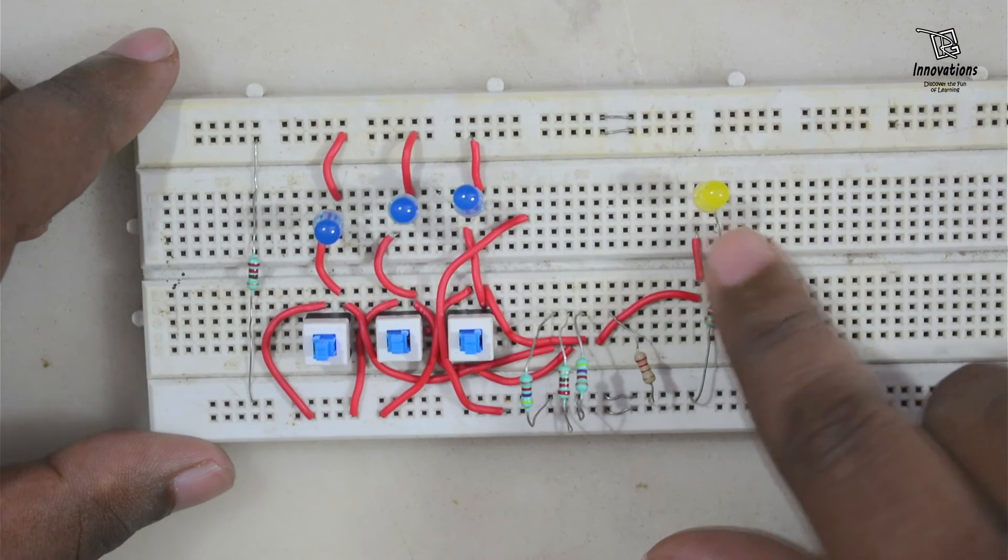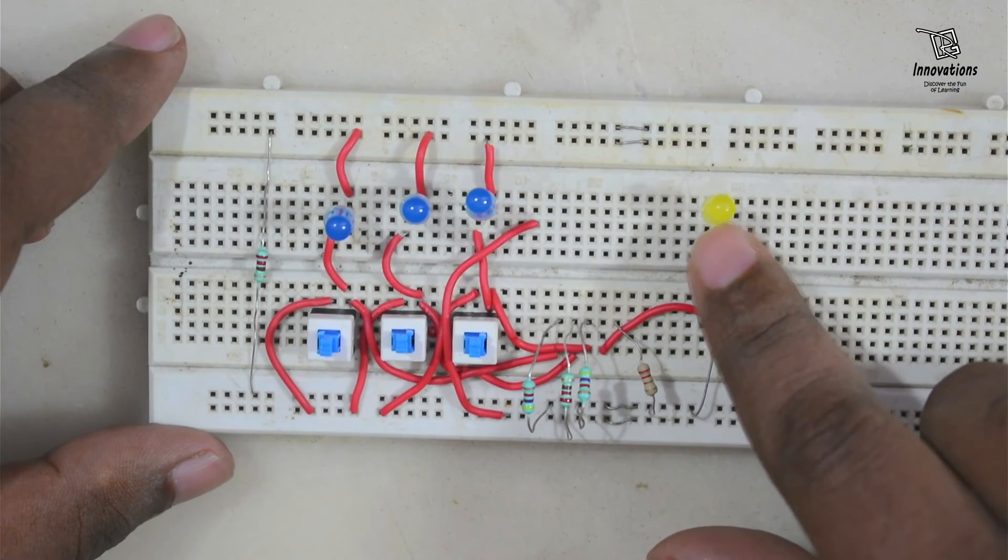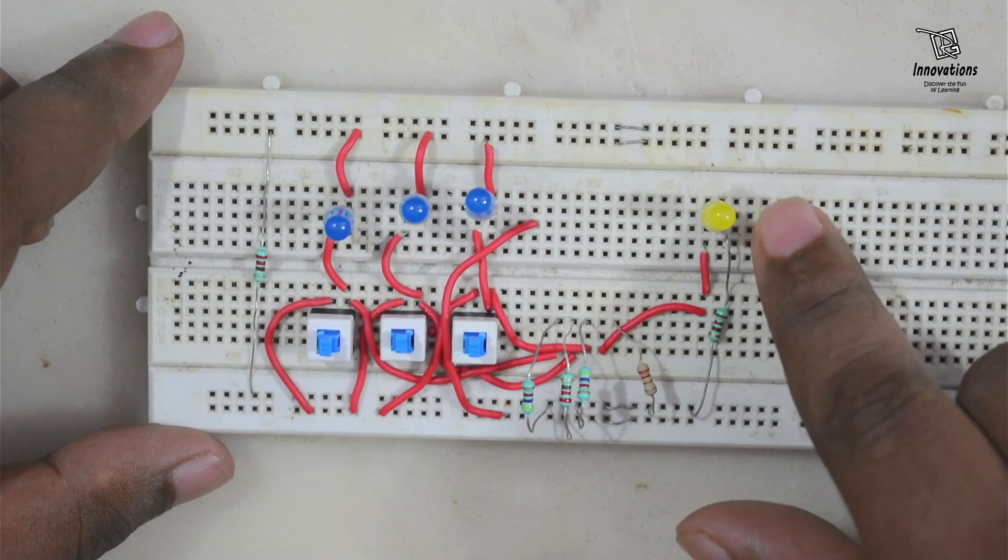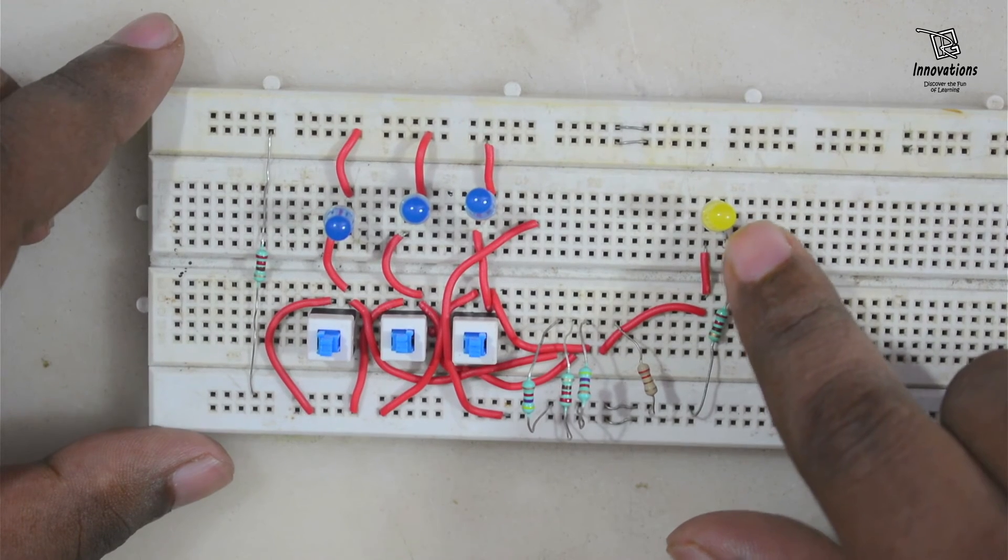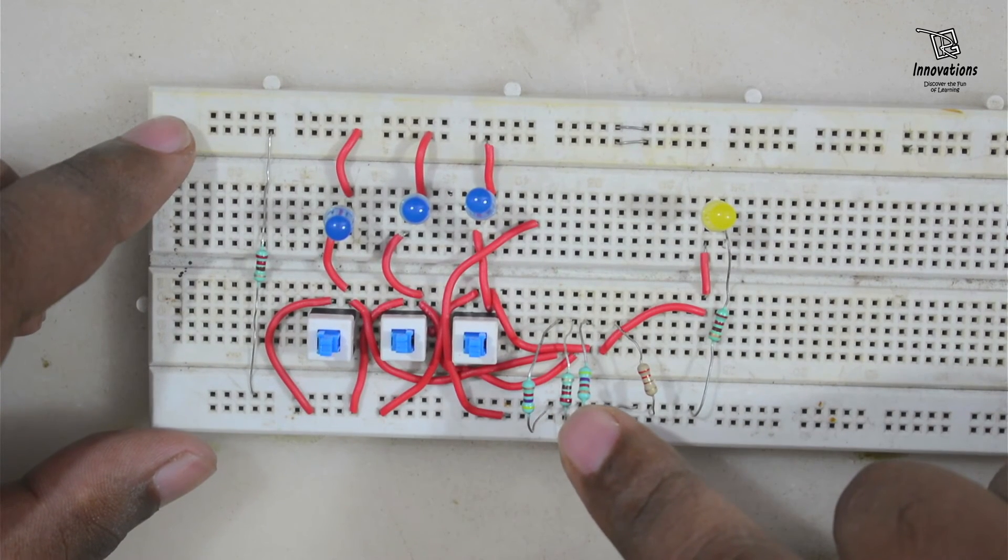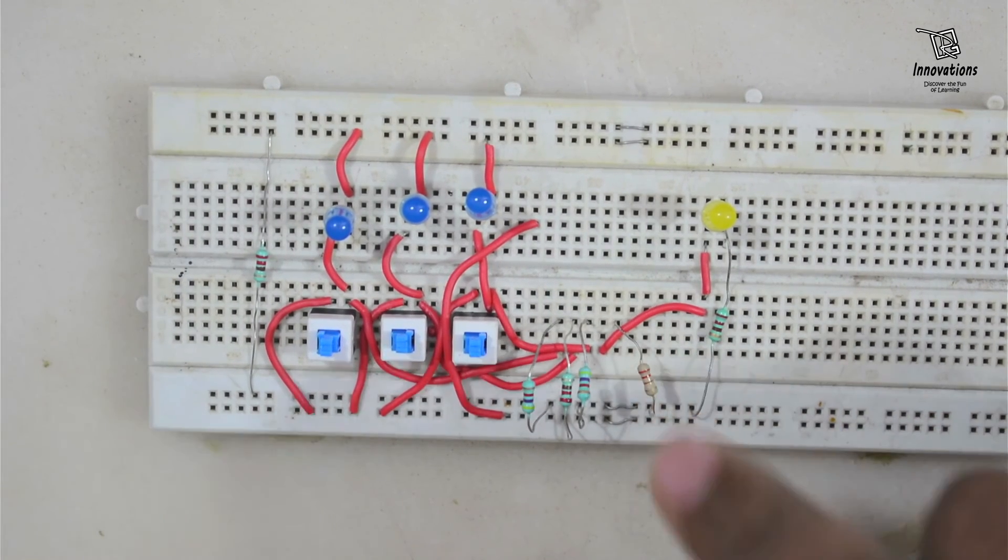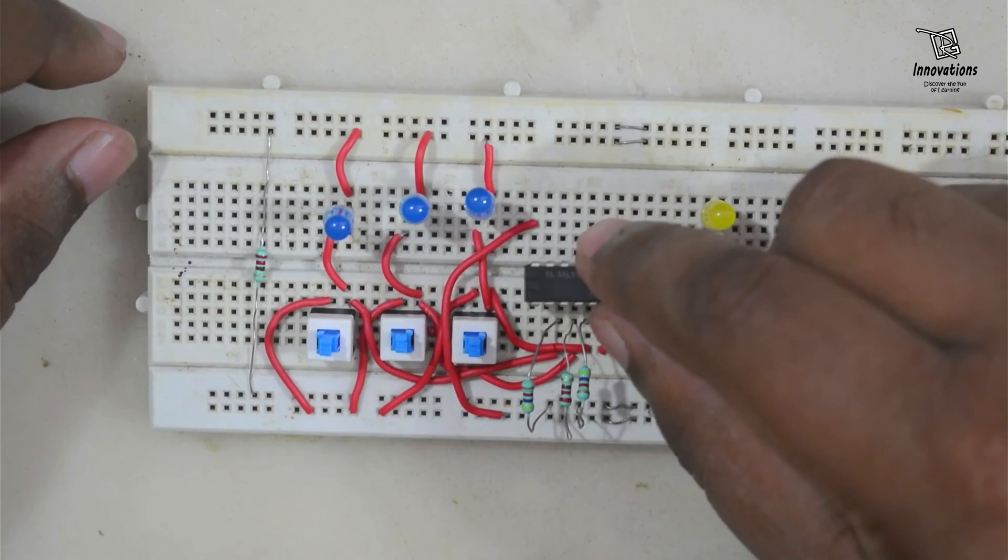And another LED is connected here to show the output status. When the output is high it will glow, and when the output is low this will not glow. These are the pull-down resistances that we have used. We have not put the IC yet on the board. Now we will put the IC on the board.